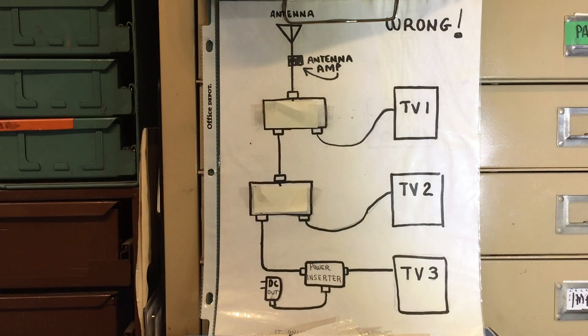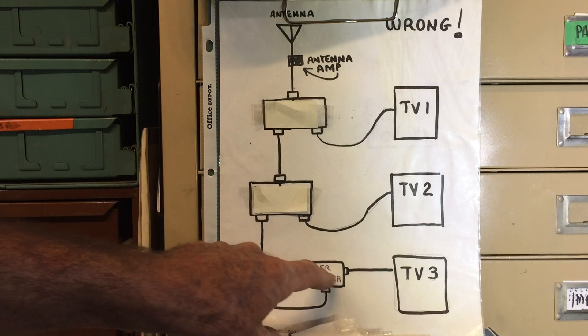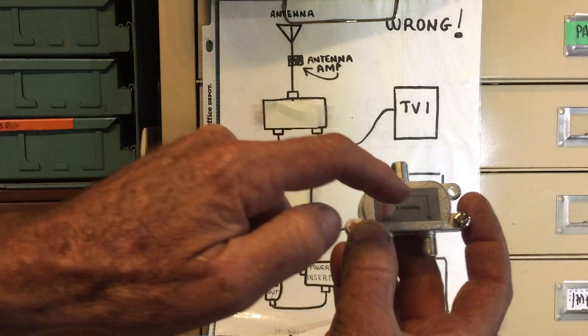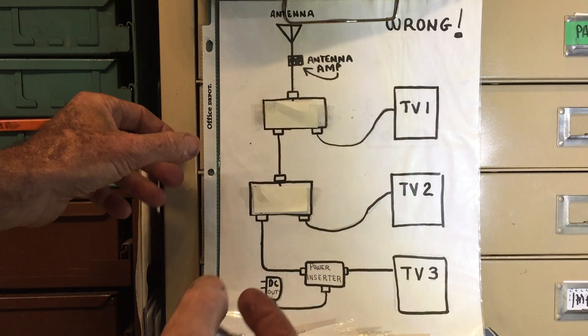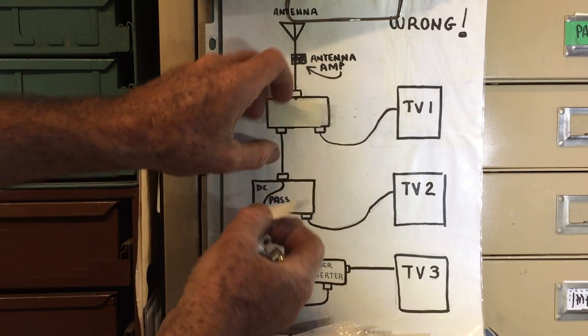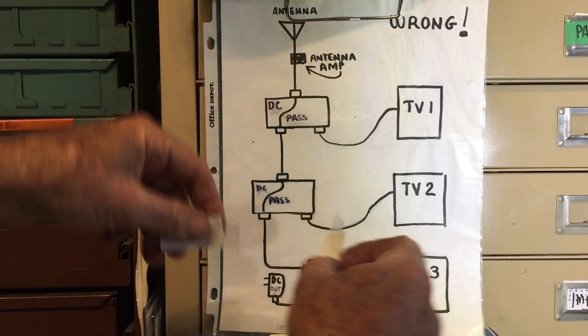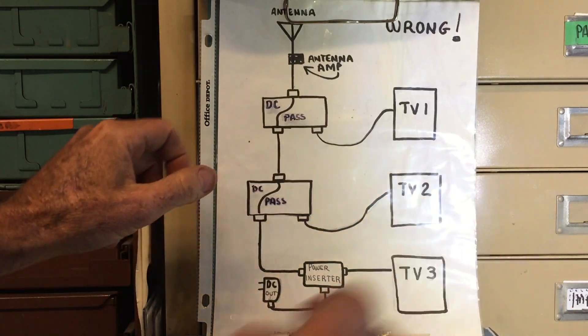Anyway, I went ahead and installed everything and had to go get a couple different splitters too, because not all the splitters allow power to pass through them. Some of them have isolation where only the signal can pass through but not an actual DC voltage, so I had to make sure I bought two splitters that had something called a DC pass-through, same as with satellite systems.